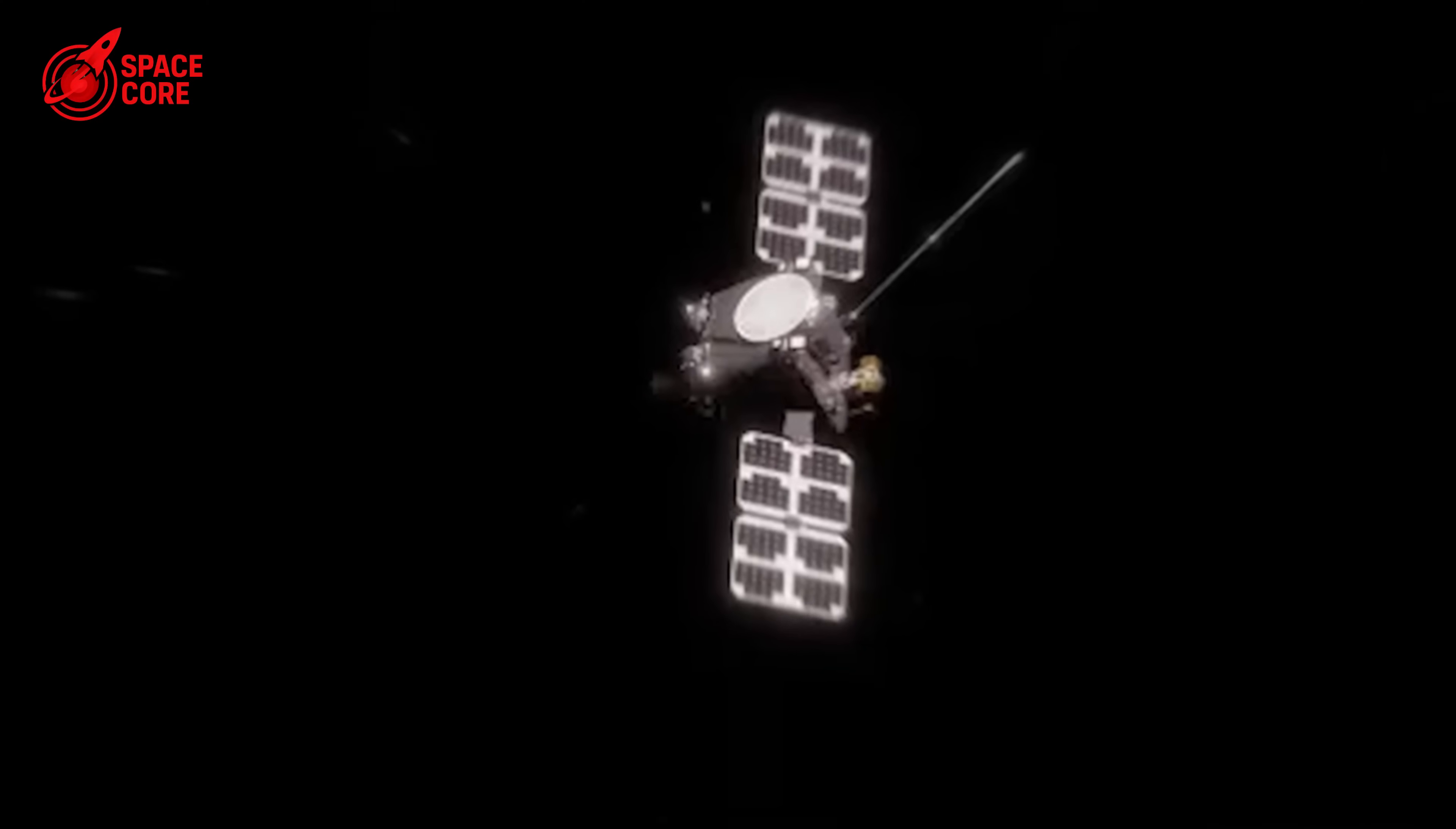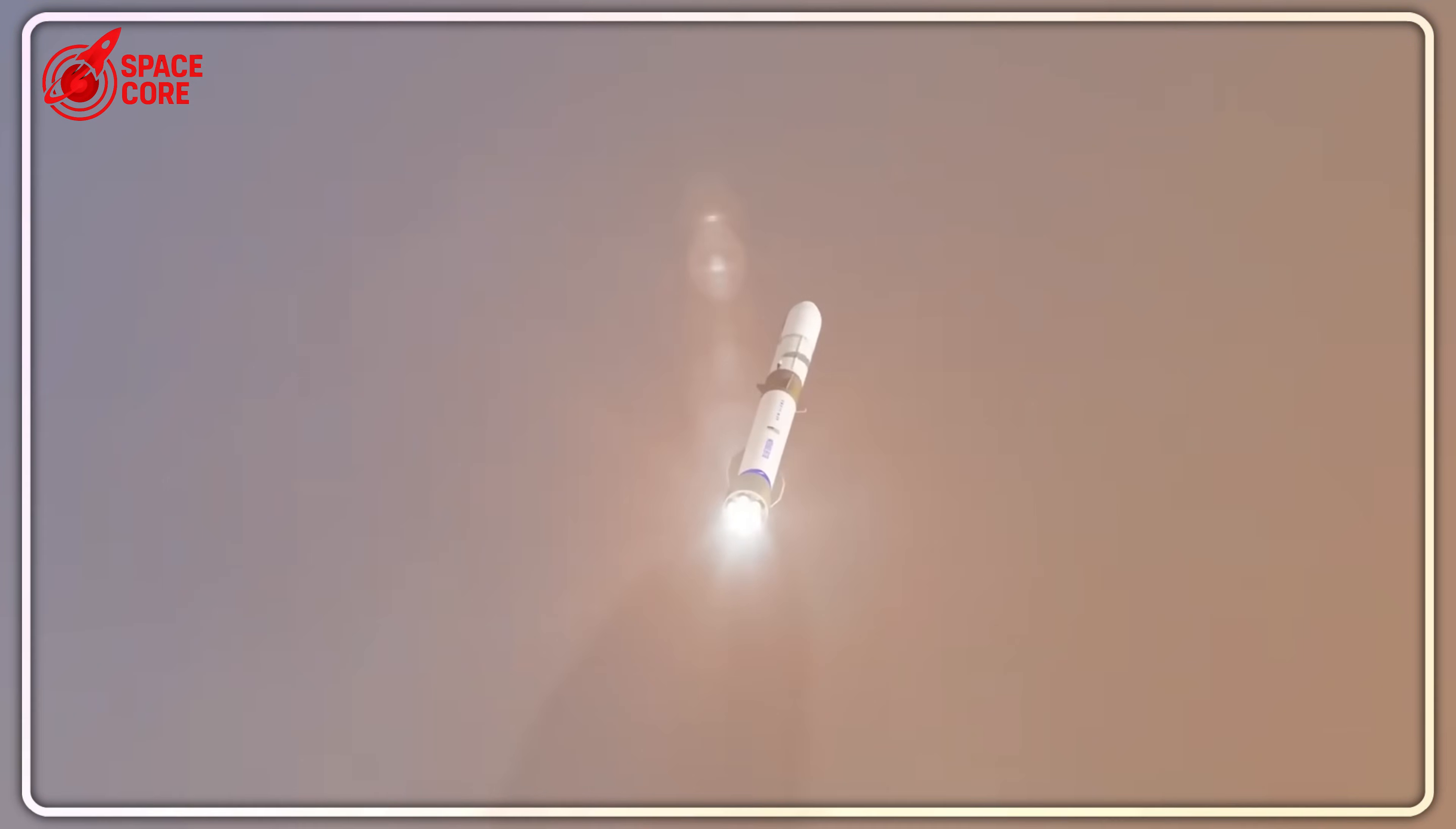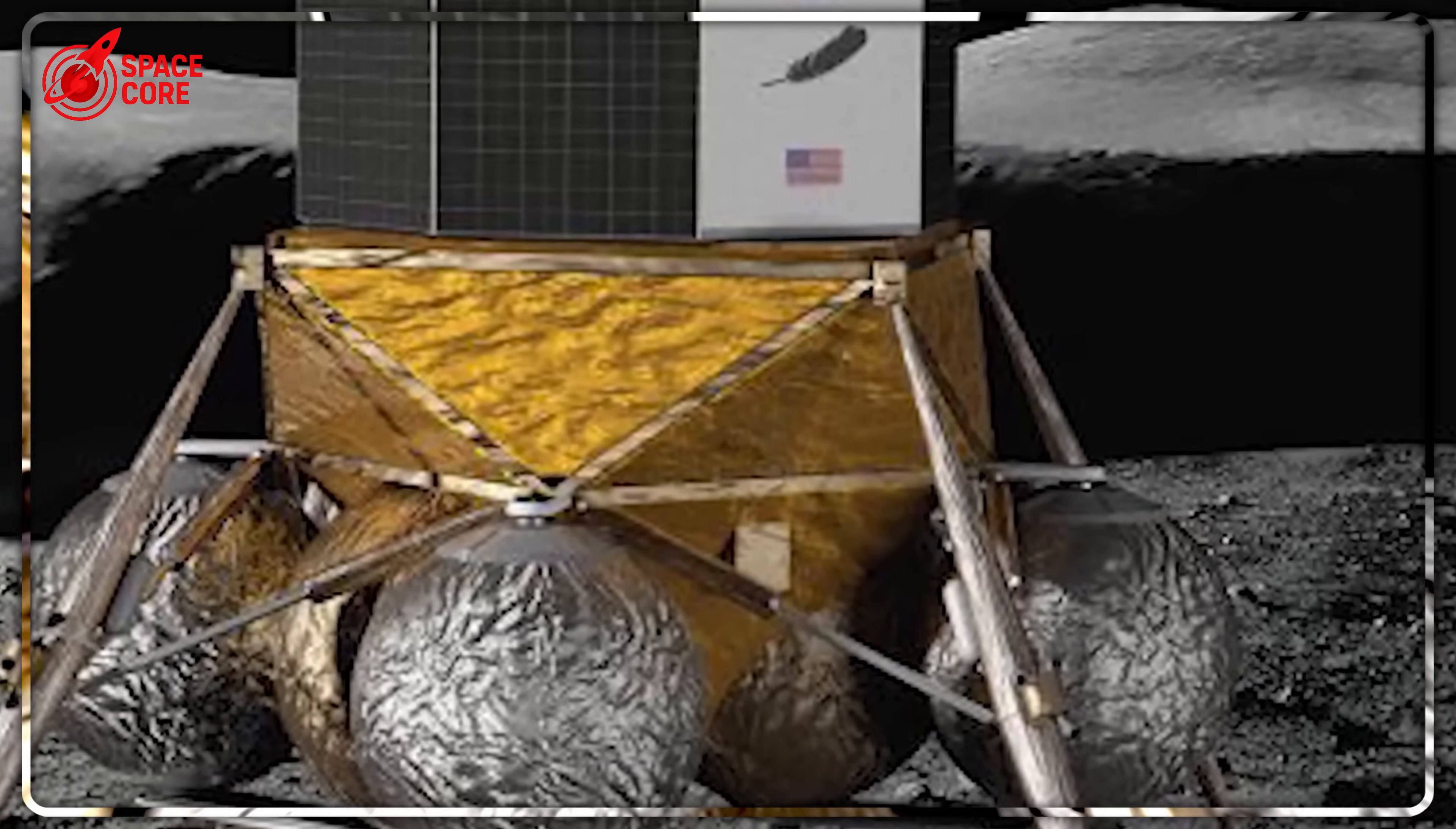Here's the truly shocking part: each failed test makes the problem worse. The combustion instability isn't just random. It's getting more violent. The latest test data shows pressure fluctuations 40% higher than when they started. The engines aren't learning. They're breaking down. Remember how Blue Origin chose methane fuel because it was supposed to be cleaner and more efficient? That decision is now destroying them. Methane requires precise temperature control within two degrees Celsius. Get it wrong, and you get what Blue Origin is experiencing: violent pressure oscillations that can crack engine parts or destroy the entire rocket.